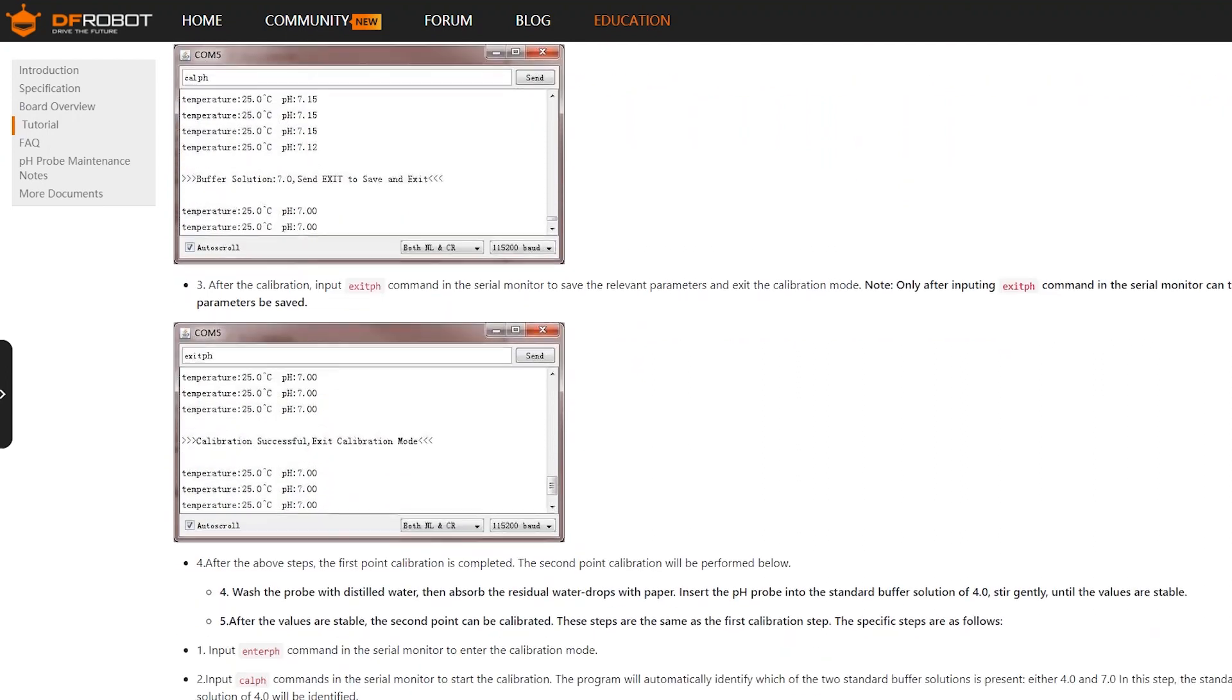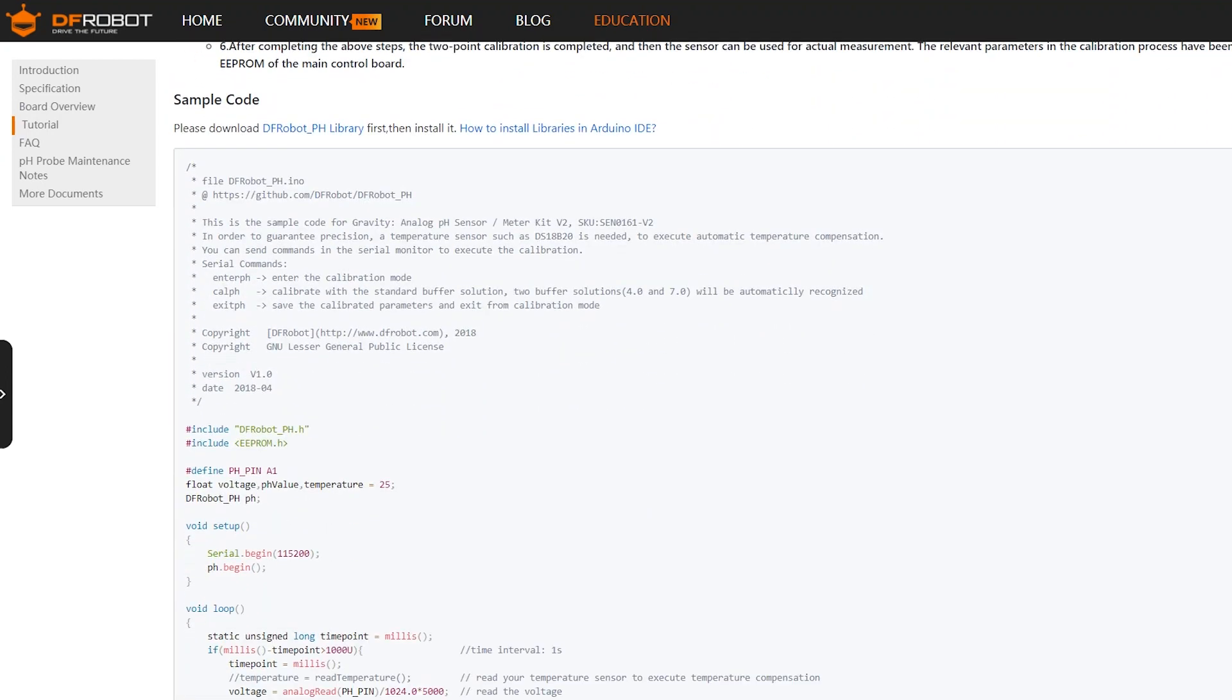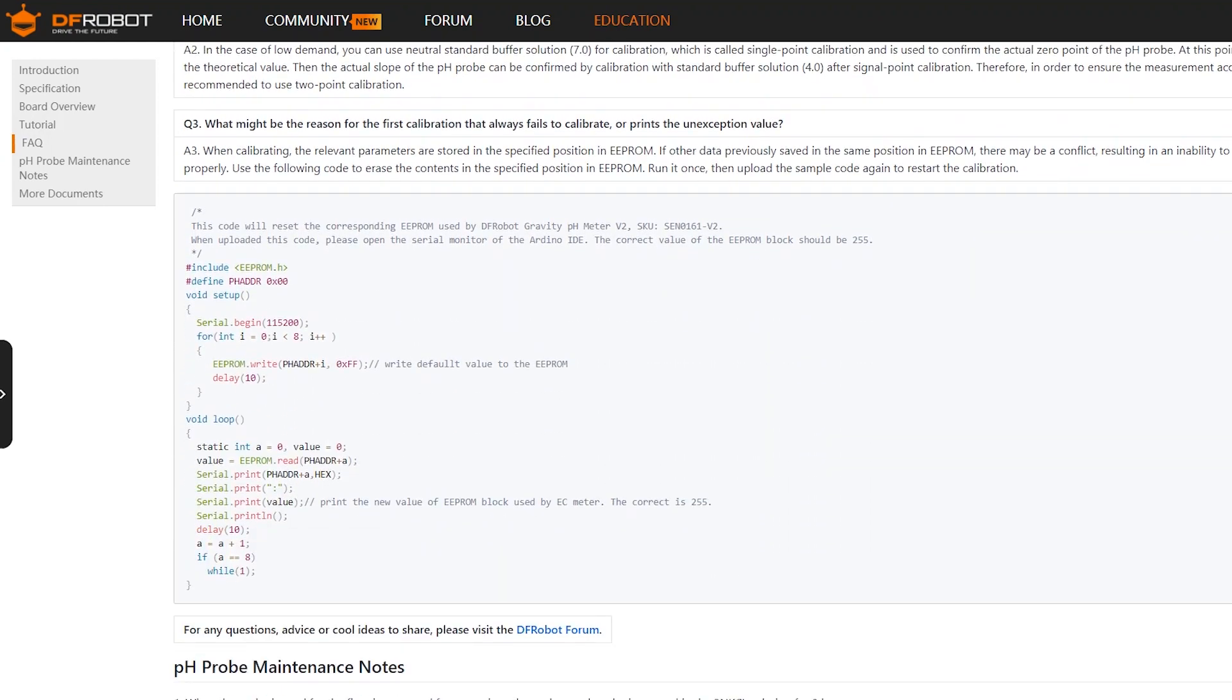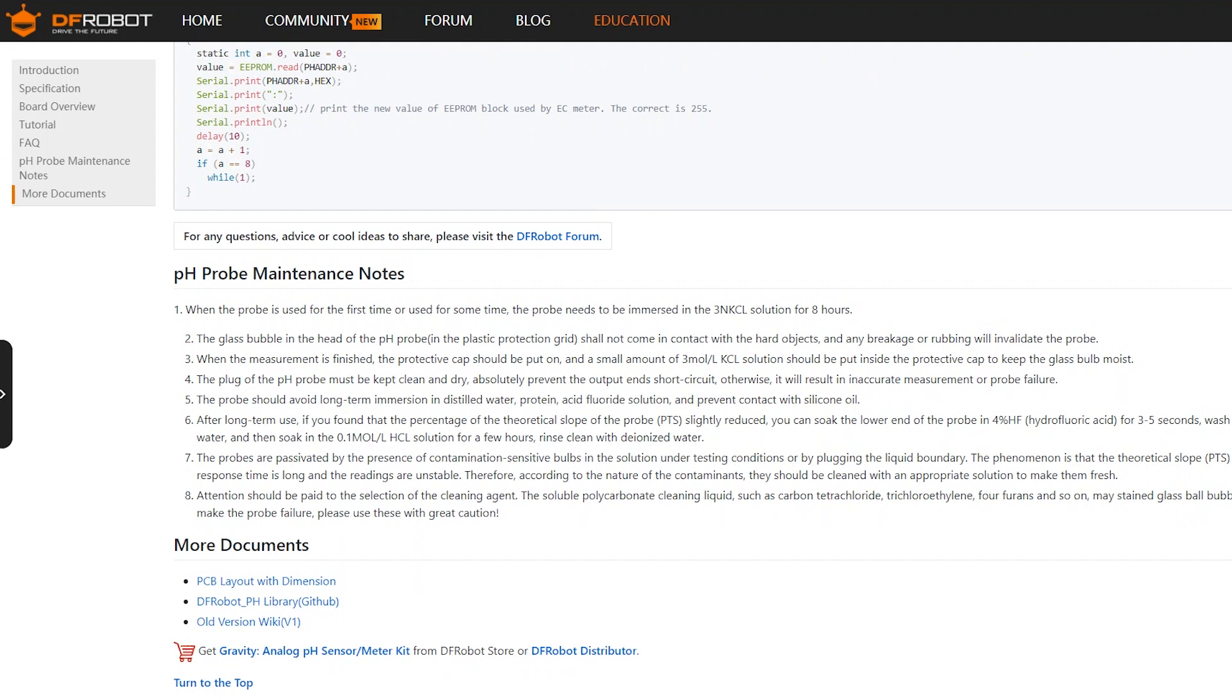For daily use, DF-robot provides the relevant open-source software library, which helps automatically identify the standard buffer solutions and perform two-point calibration quickly.